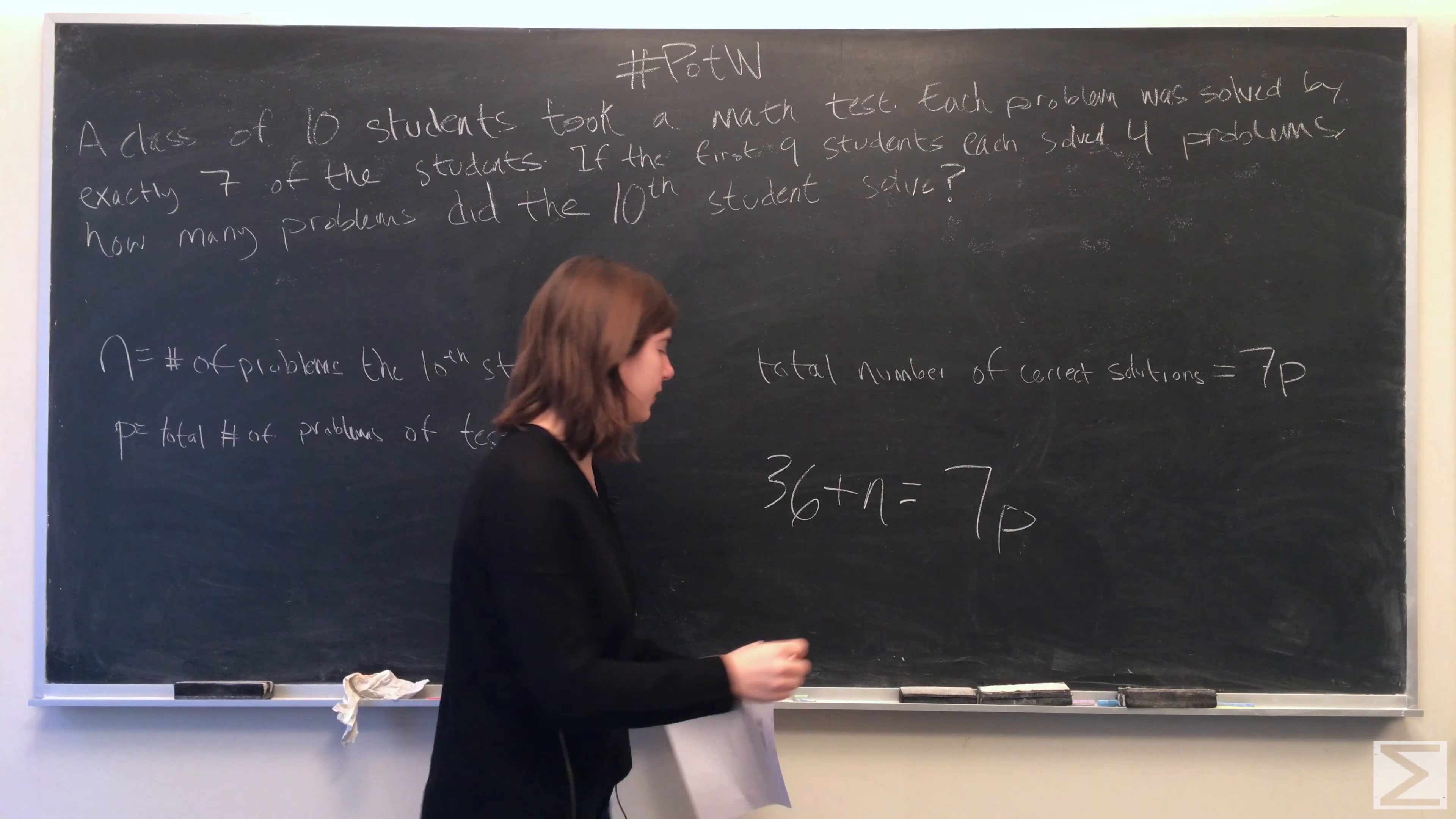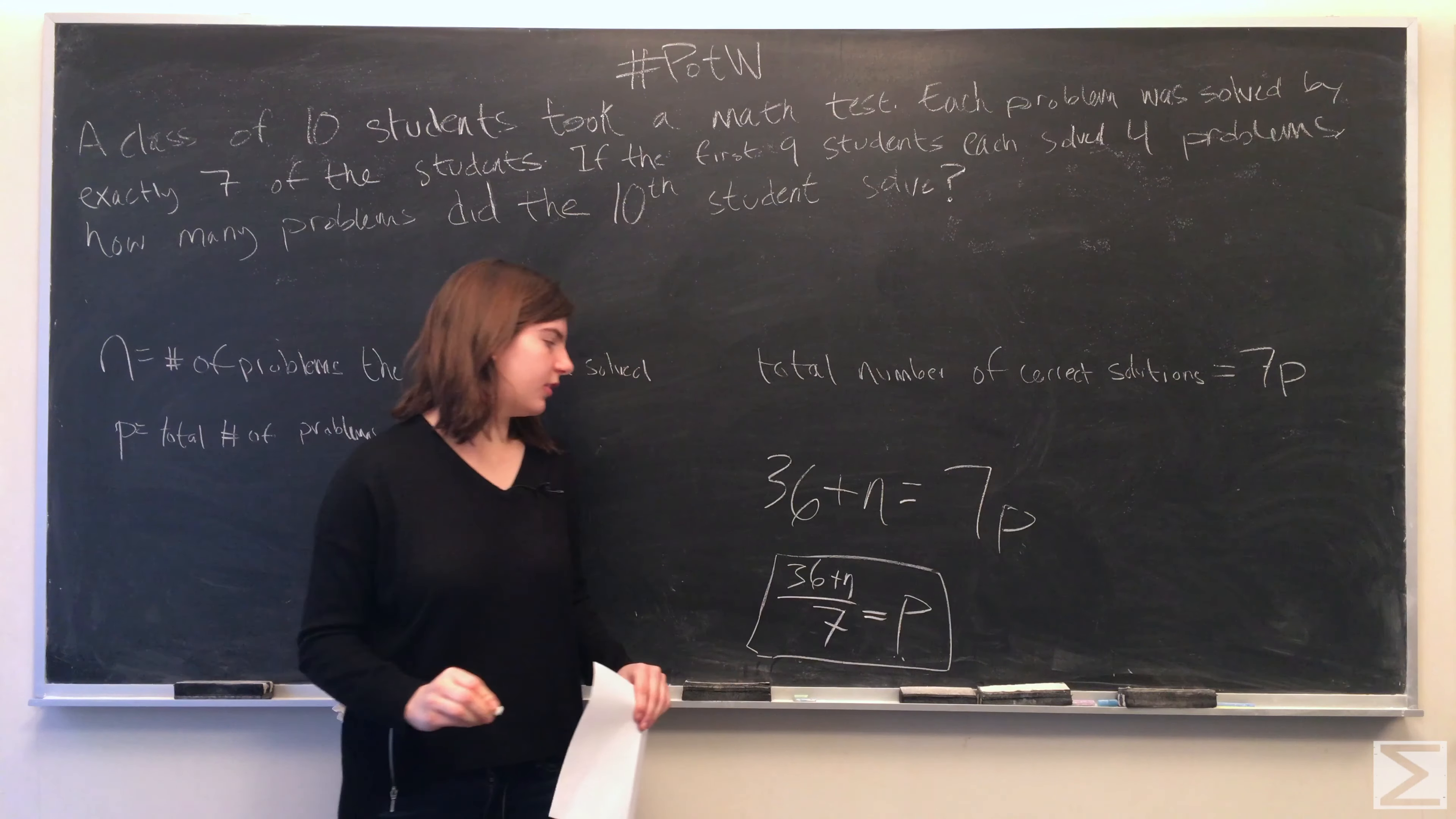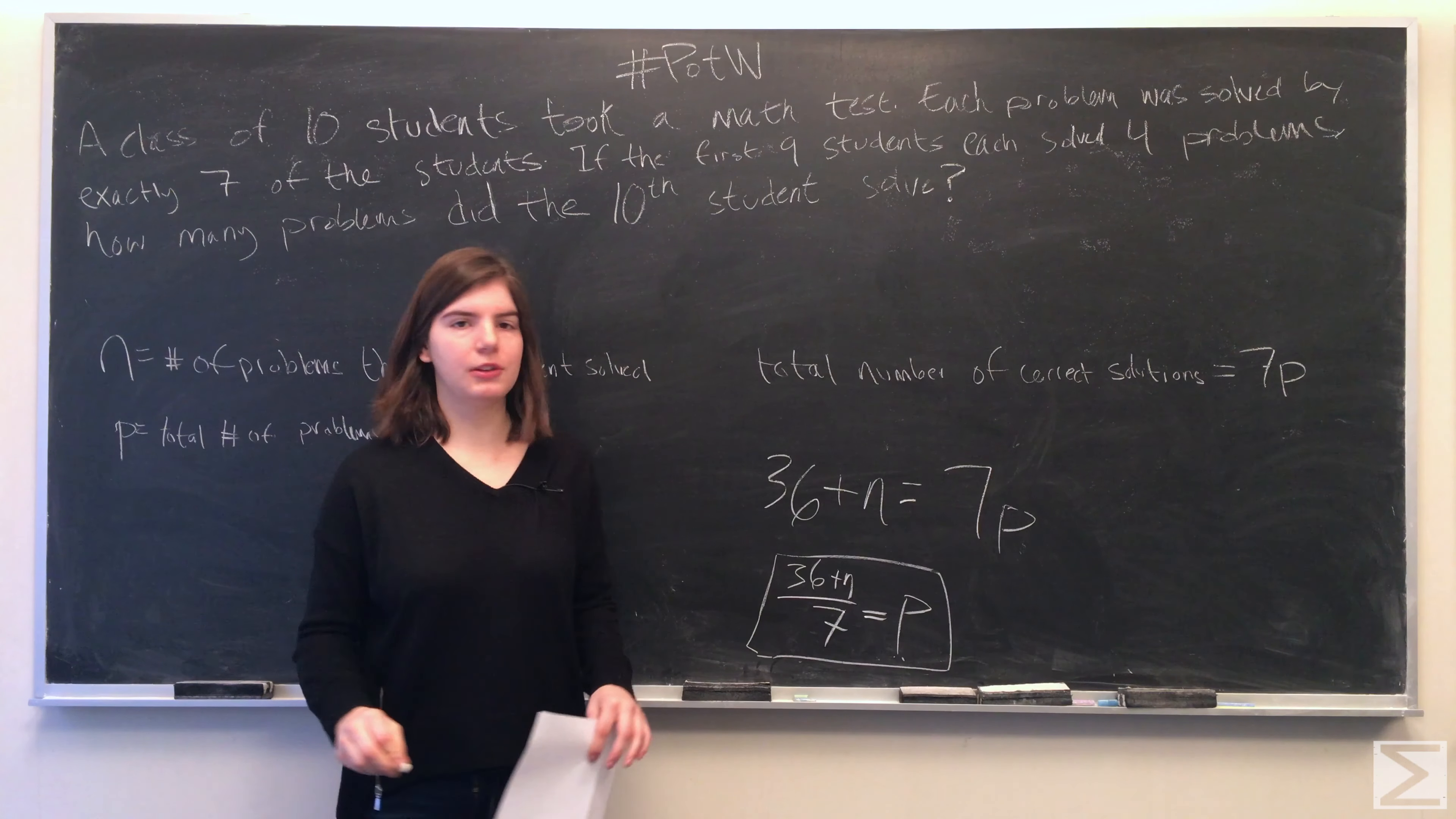We'll divide both sides by 7. Now we have 36 plus n divided by 7 is equal to p.